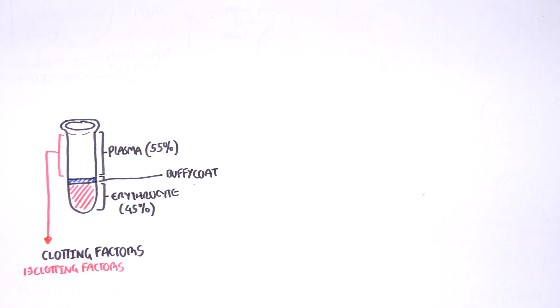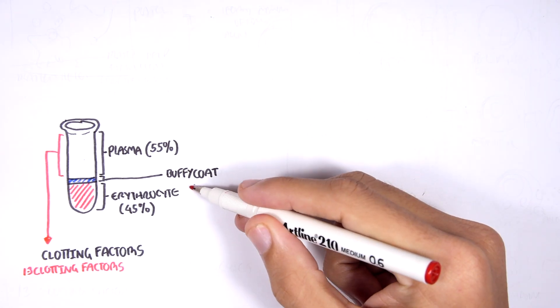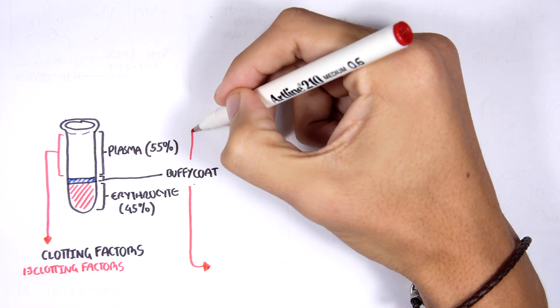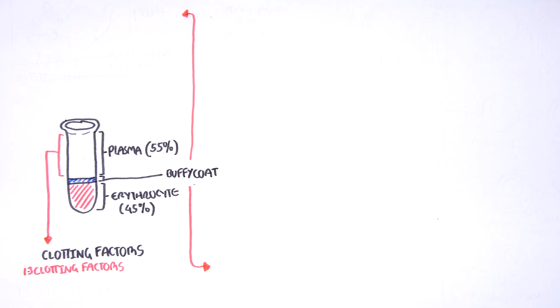Now, in this video we will mainly focus on the buffy coat layer and we won't focus that much on the plasma and red blood cell layer but I do have a specific video on the red blood cells and what they do so you can watch that and I'll provide the link. So anyways, let's focus on the buffy coat layer, the middle layer that makes up 1% of the total blood volume.